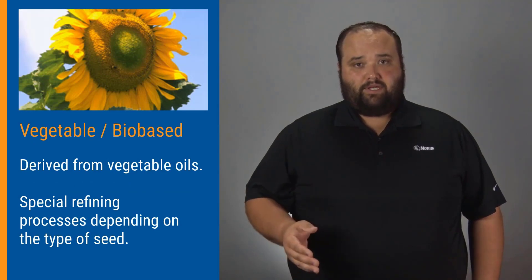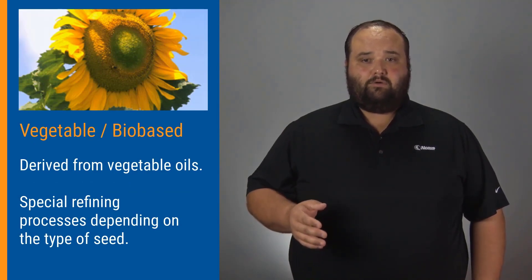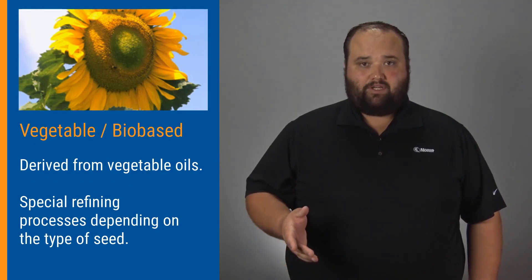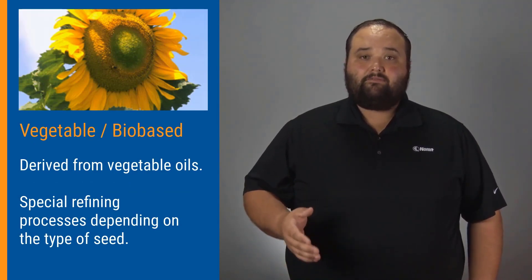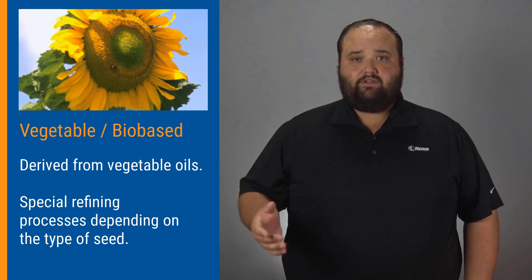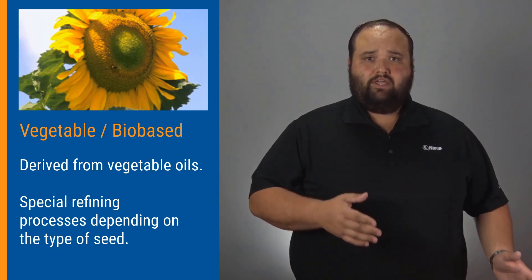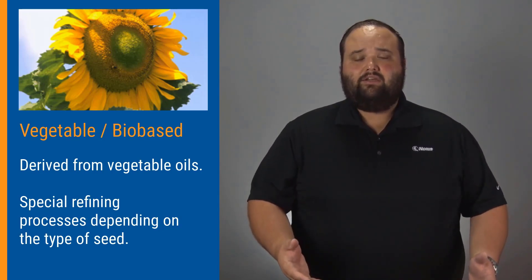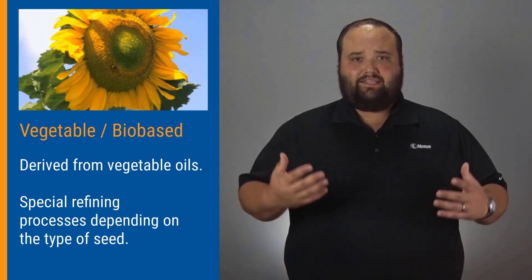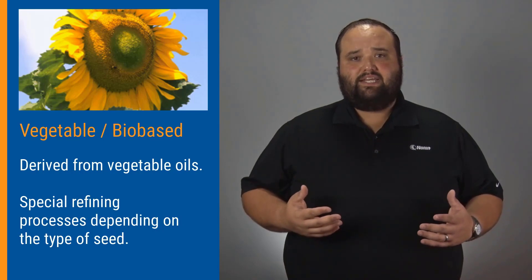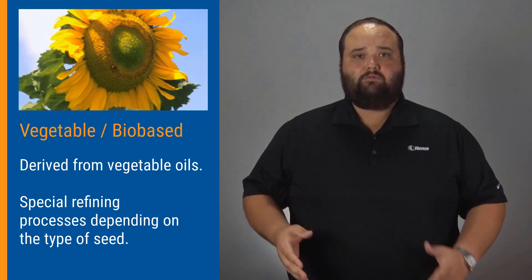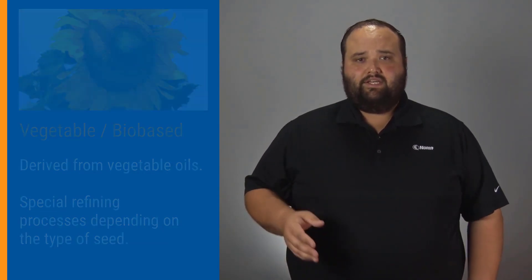Last but not least, we have vegetable-based oils, or maybe bio-based lubricants. These come from plant material, and very similar to mineral oil, they are refined — so they extract the oil from the seeds, refine it, and then we're able to build our lubricant off of these.